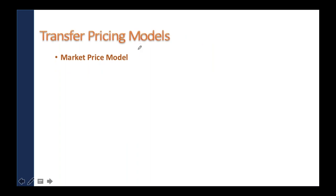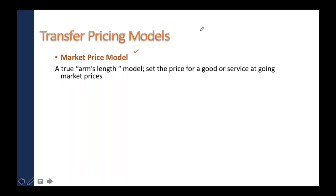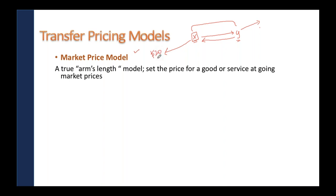We have different transfer pricing models. The market price model, also known as arms length price, means X company and Y company should buy and sell goods internally at market price — the same price they are selling to external customers. X company is selling t-shirts to external customers at $20; that is the market price. So any t-shirts required by the automobile company should be purchased at market price only. When the market price model is implemented in the company, for internal transfer of goods and services there is no change at all — the same price sold to the external customer must be used.